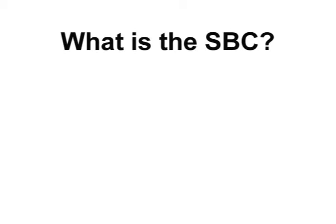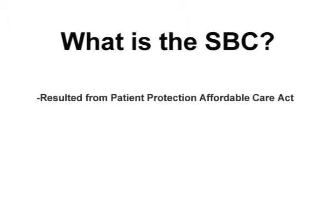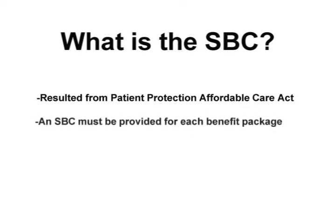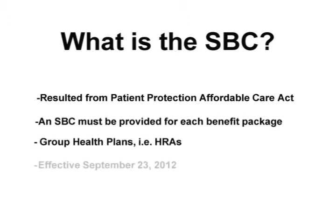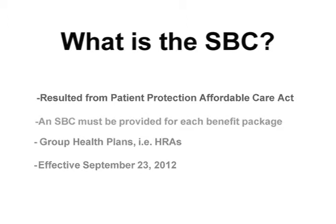The Patient Protection and Affordable Care Act, commonly known as Obamacare, now requires a Summary of Benefits and Coverage for all health insurance plans. This includes your health reimbursement arrangement currently being serviced by OCA. Effective September 23, 2012, the law requires health insurers and self-funded group health plans, like an HRA, to provide a standard Summary of Benefits and Coverage to all individuals enrolling in the medical plan.